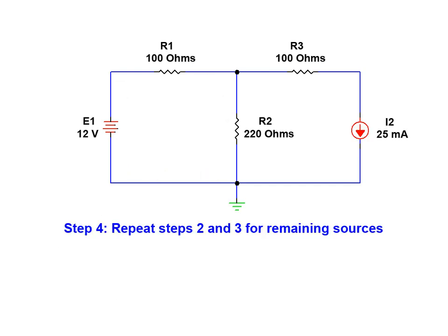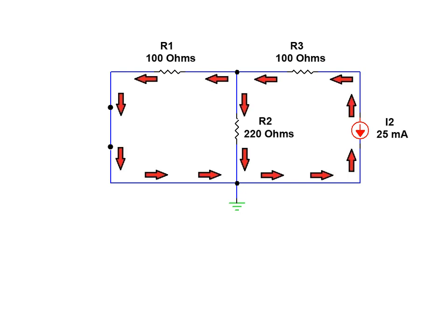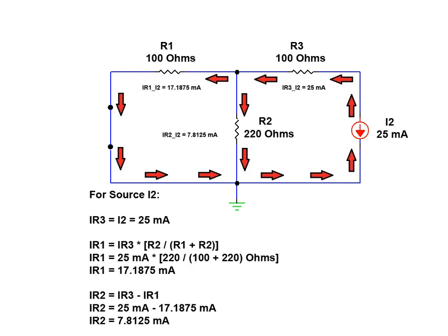We can now repeat steps two and three for the I2 current source in this network. We begin by removing and short-circuiting the voltage source. We can now calculate resistor currents based on the I2 current source for this network. As we're dealing with the current source this time we can use the current divider rule to calculate the individual resistor currents.